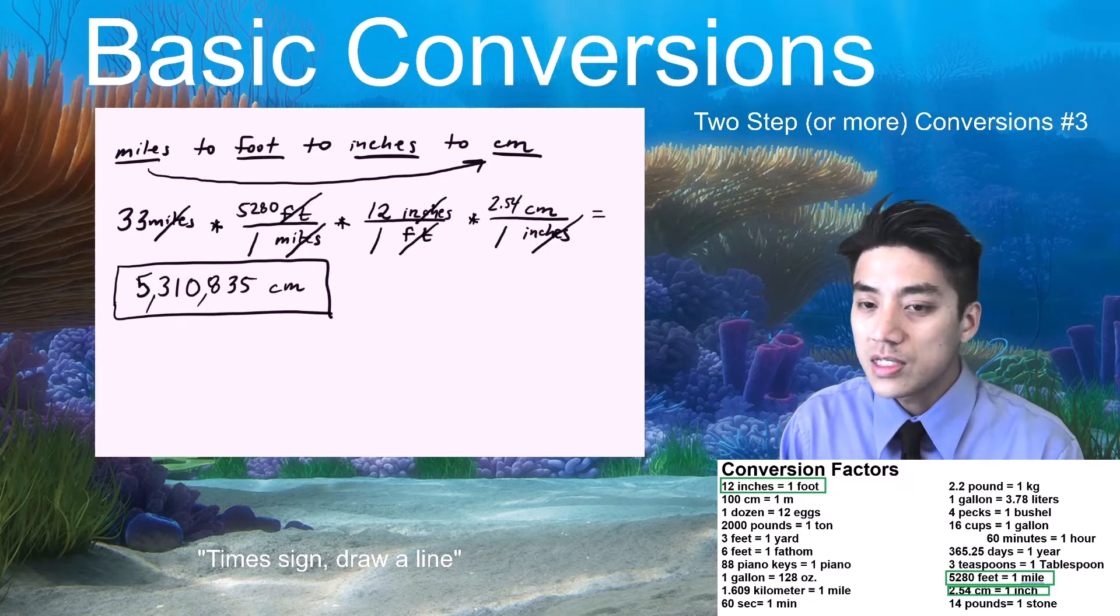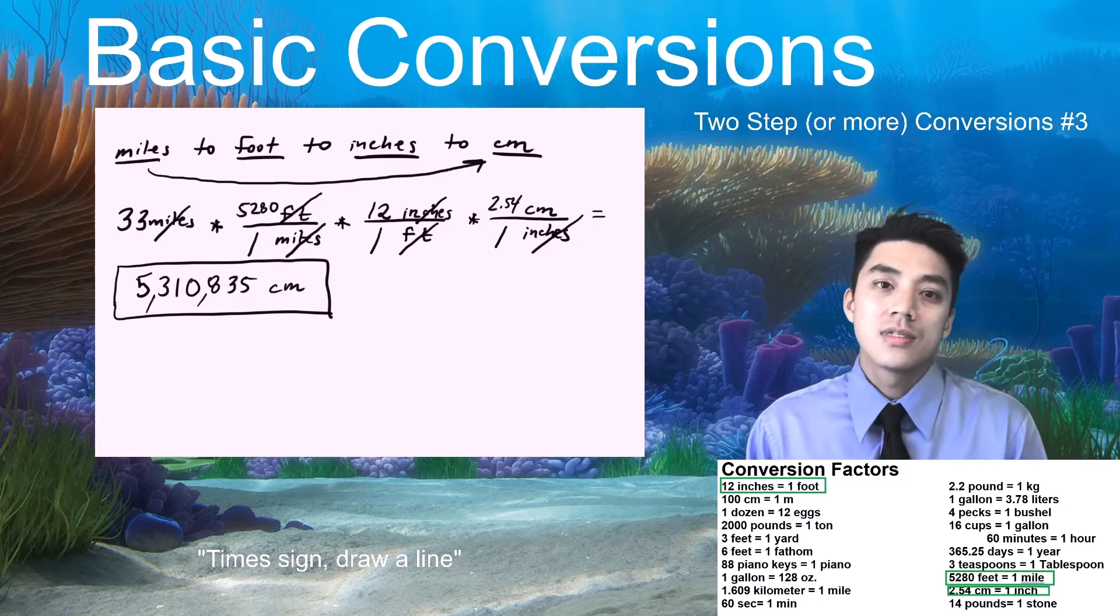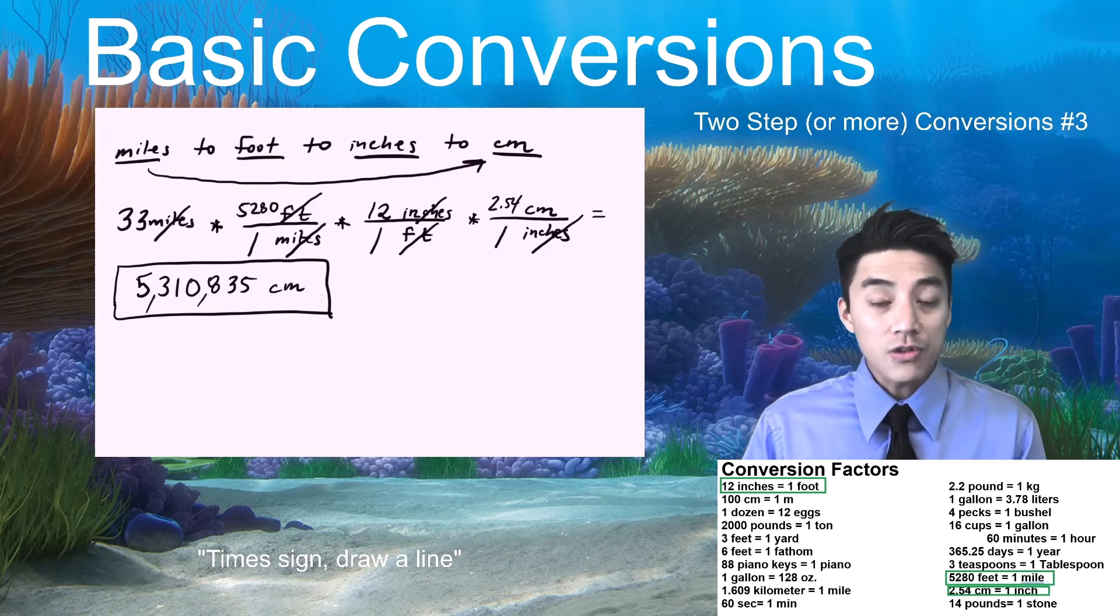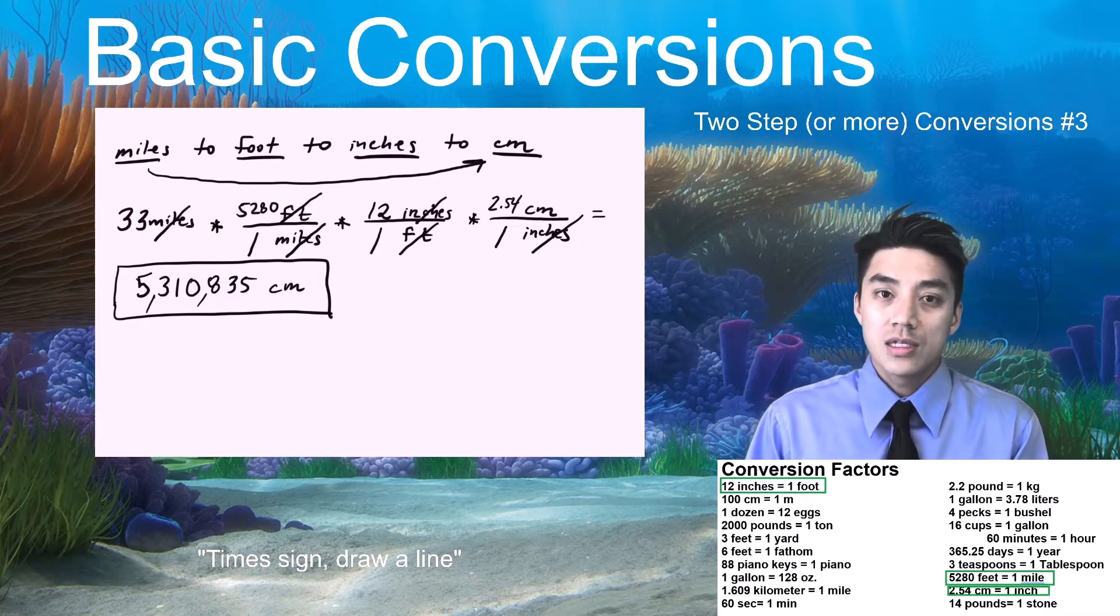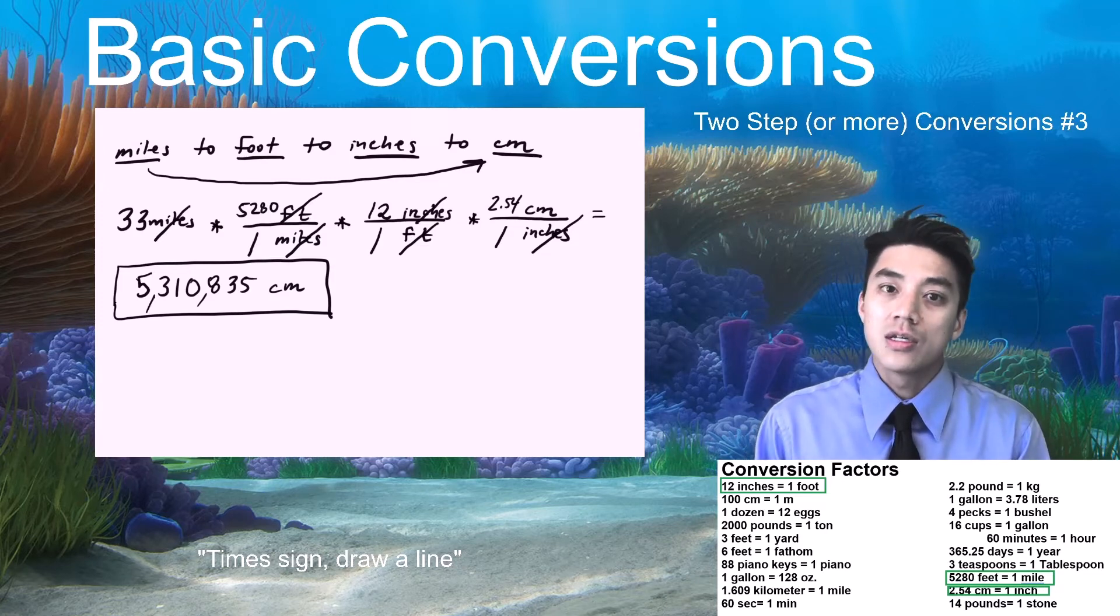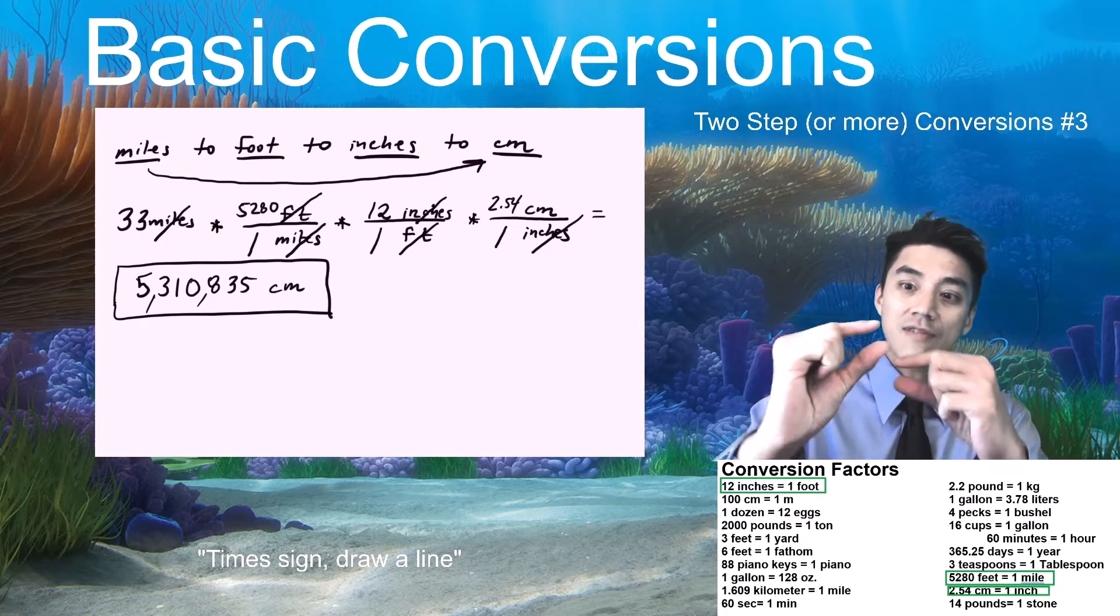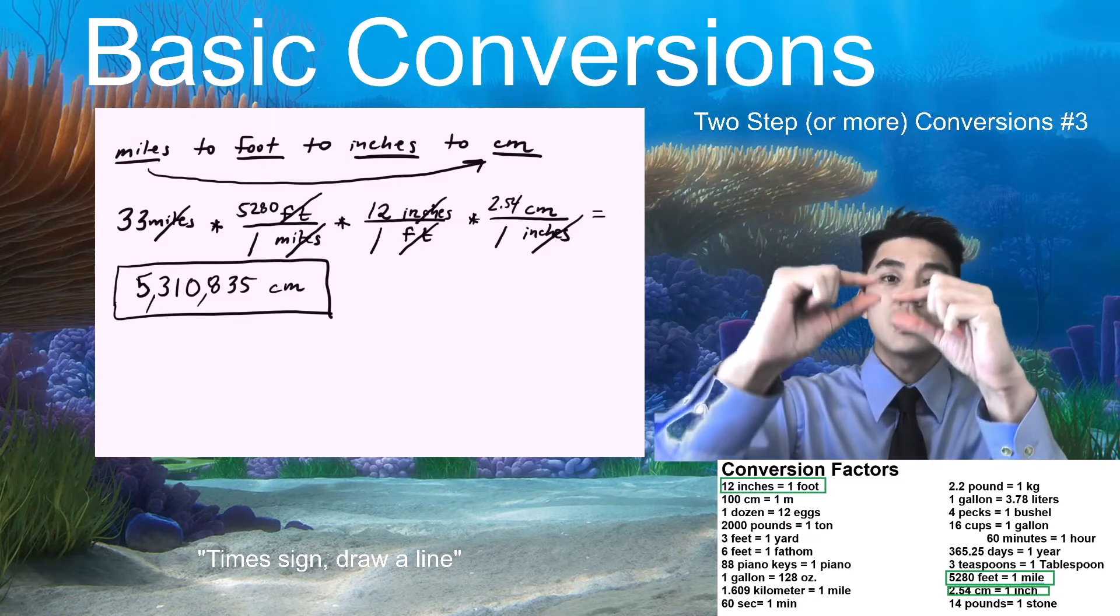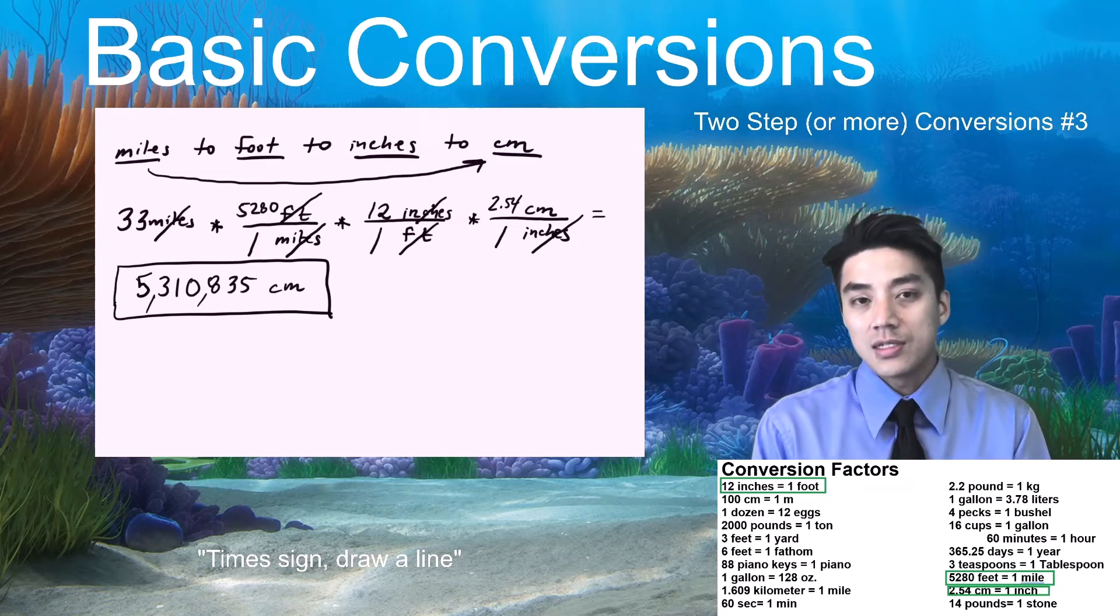So it took us three steps to get to this answer. And now you ask yourself, does it make sense? Okay, so you're asked to go from 33 centimeters. That's the distance, again, from Santa Clemente to Irvine. Okay, 33 miles. Okay, and now you're asked to convert to centimeters. And you get a really huge number. Okay, it's like 5 million something centimeters. A centimeter is like this. Okay, so if you had to stack 5 million of these centimeters from Santa Clemente to Irvine, that would seem to make sense.